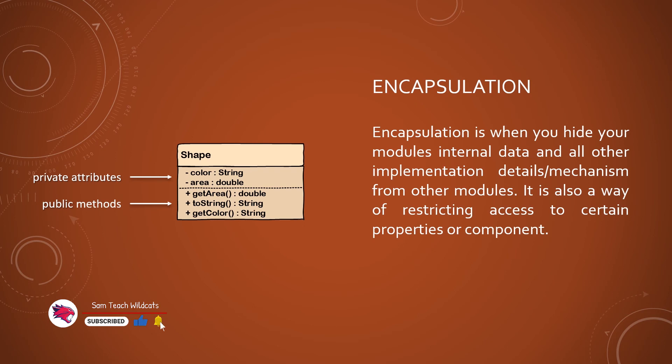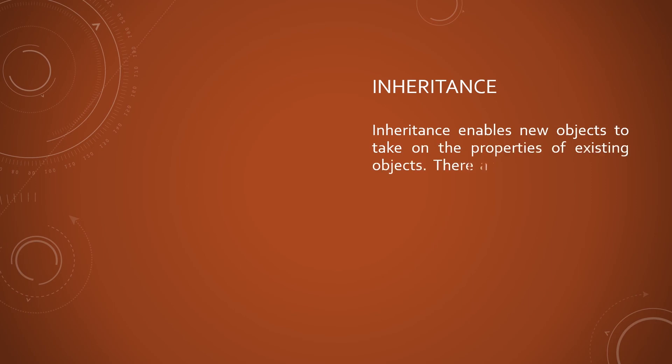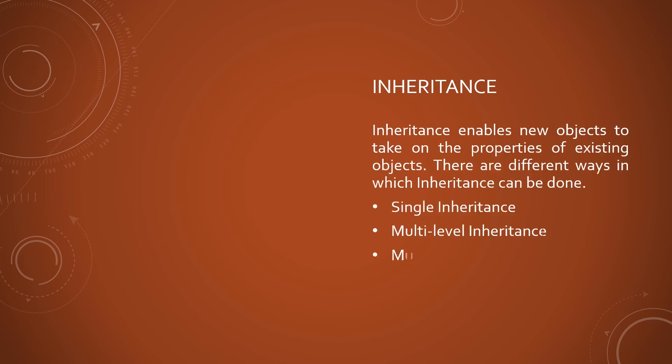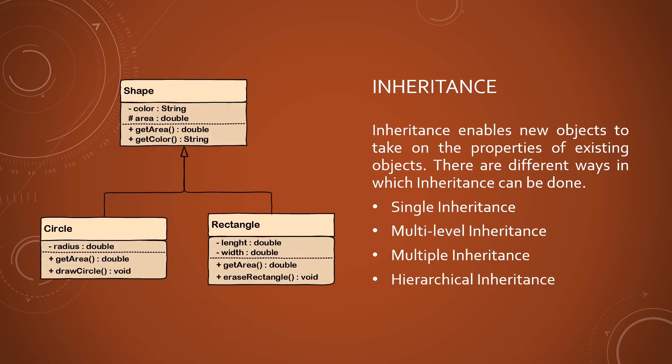When an object is instantiated or created, it acquires the features and actions defined in the class to which it belongs. However, classes can also be organized hierarchically, where classes on higher levels share their features and actions with classes on the lower levels. This makes it possible to define new classes from existing ones, although other features and actions can be added to them.